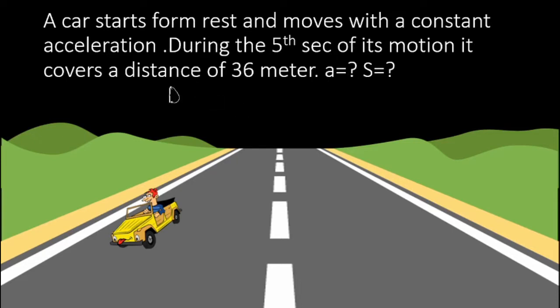Car, because it starts from rest, how do you form data? Car was starting from rest, so initial velocity is equal to zero. And we have given the distance which has covered in the fifth second, which is equal to 36 meters. During the fifth second, we have to calculate acceleration and total distance covered.